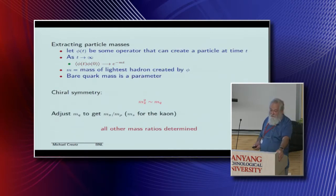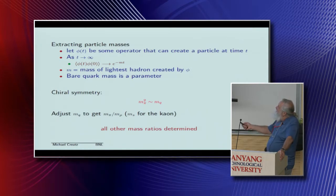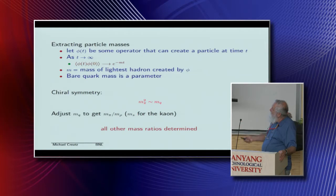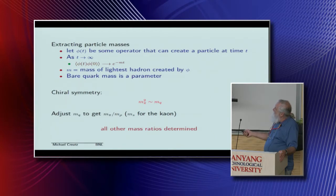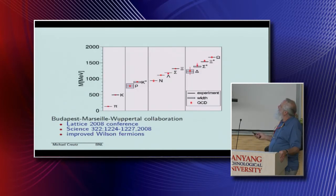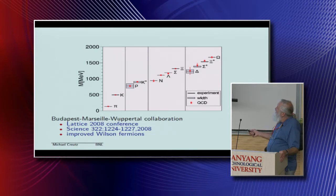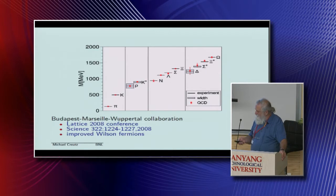One thing you can try to do is calculate the particle masses. That's done by inserting into the partition function an operator which can create the particle you're looking at. If you measure the correlation between two of these operators separated by some distance, it should fall off exponentially with the mass of that particular particle. The bare quark mass is a parameter we adjust to get the pion mass right; you can use the kaon to get the strange quark mass. But once you pick the quark masses to get a few things right, everything else is determined, and the spectrum comes out very nicely — and this is getting better with time.